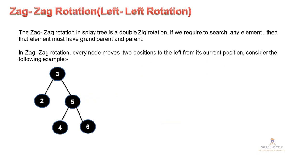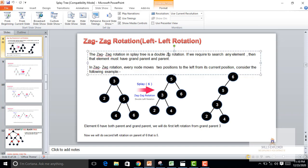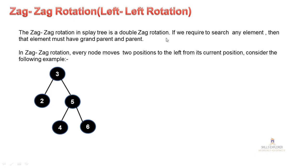Zag-Zag rotation is implemented exactly the same as Zig-Zig, with only one difference: we perform left rotation two times. We also check that the element being splayed has both a parent and grandparent present. In Zag-Zag rotation it's a double Zag rotation. If the element must have a grandparent and parent, every node moves two positions to the left from its current position. Consider the example: you have nodes 3, 2, 5, 4, 6.